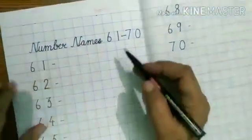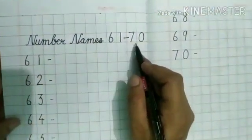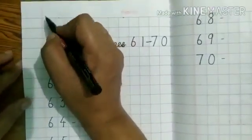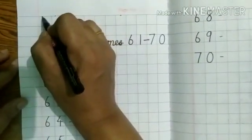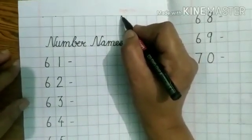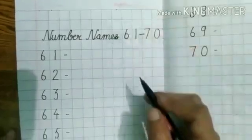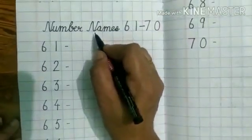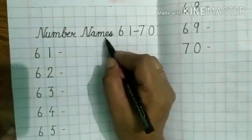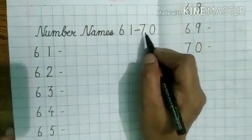We will write down number names 61 to 70. First of all, as usual, you have to write down date, then month, and after that the day. Then you have to write down the topic, that is number names 61 to 70.